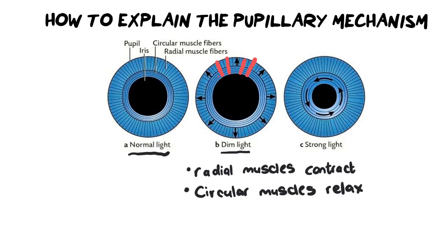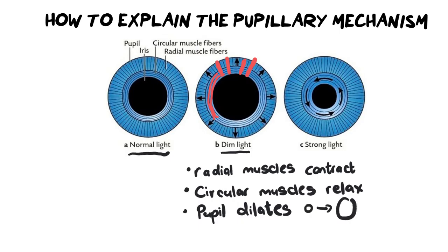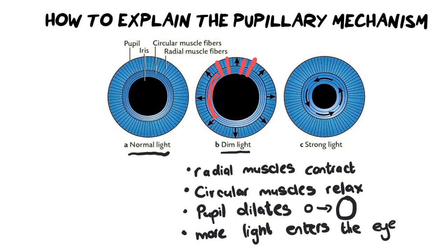The next step is the pupil dilates — which means it gets bigger. We're going from a small pupil to a bigger pupil. And the final point is more light enters the eye. That's how you get four out of four. Generally, this question won't be more than four marks unless they've married this question with another topic.